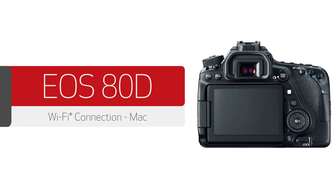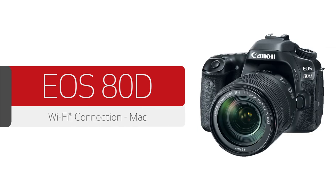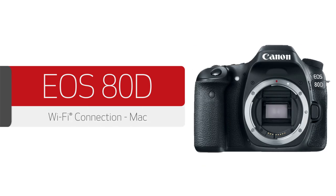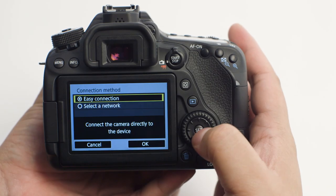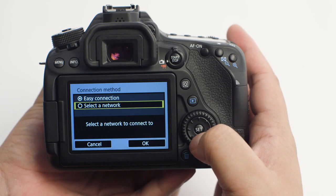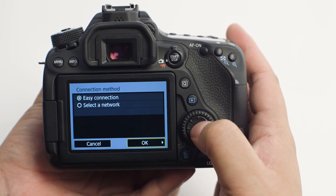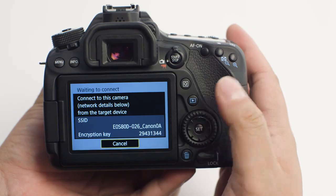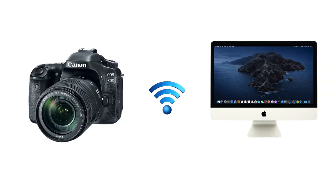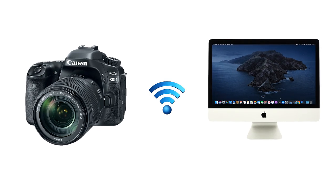In this video, we'll show you how to connect your Canon EOS digital SLR camera to a Mac over a wireless network. Let's get started. Using the easy connection method, you can easily transfer your photos and videos from your Canon EOS digital SLR camera to your Mac.